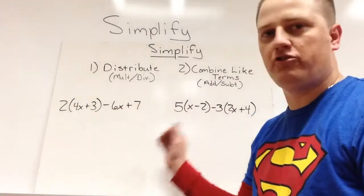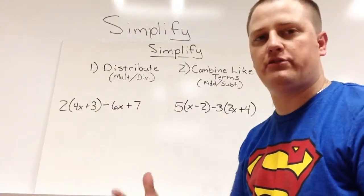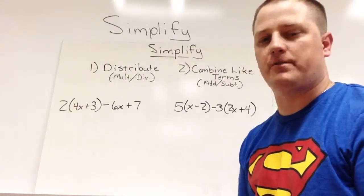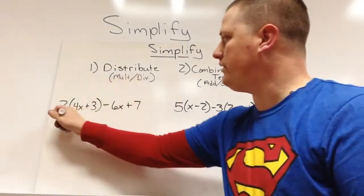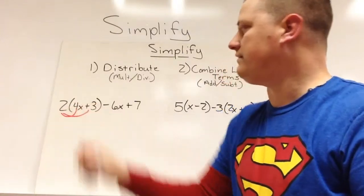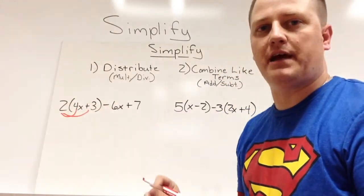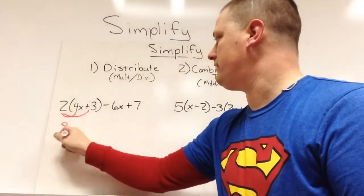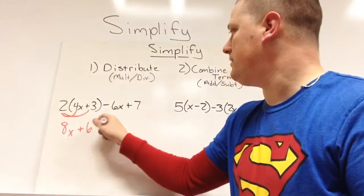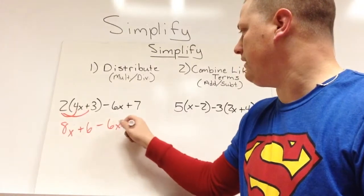Alright, so I've got two problems, we're just going to practice doing these two things together. So first I have to look for any distributing. I'm going to take 2 and distribute inside the parenthesis. It doesn't go over here because these aren't inside the parenthesis. 8x plus 6 minus 6x plus 7.